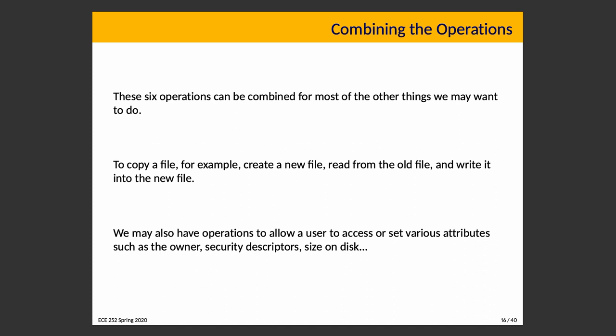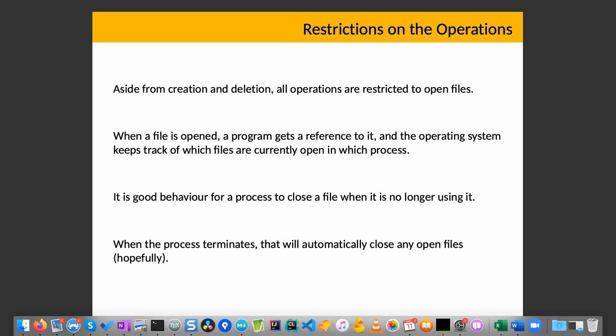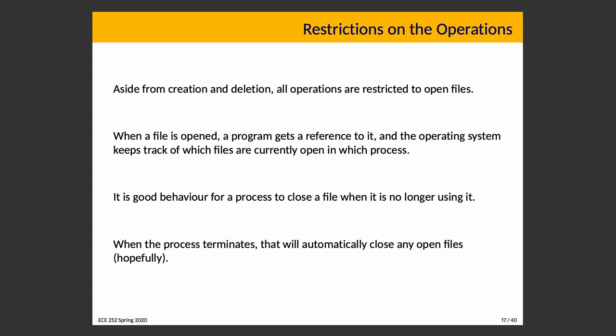Many basic operations can be combined for other purposes — to copy a file, you create a new file, read from the old one, and write to the new one. There can also be operations to read or set various attributes: assign the owner, change access permissions, find out the size on disk. Aside from creation and deletion, every operation is restricted to an open file. When a file is open, the program gets a reference to it, and the operating system keeps track of which files are open from which process.